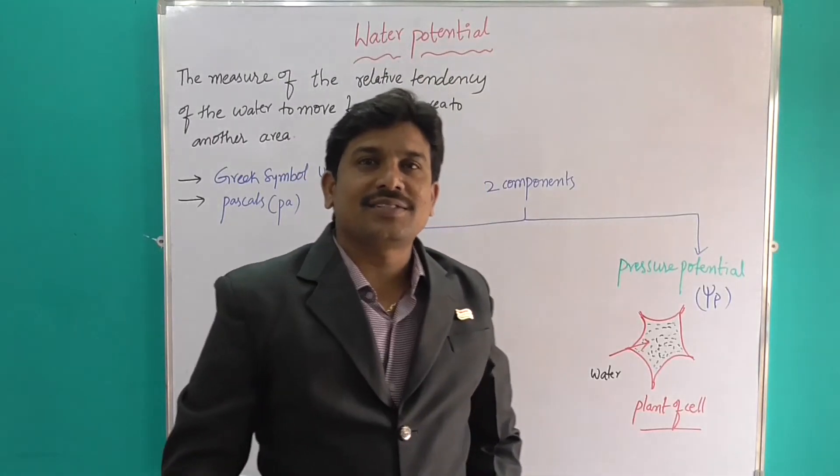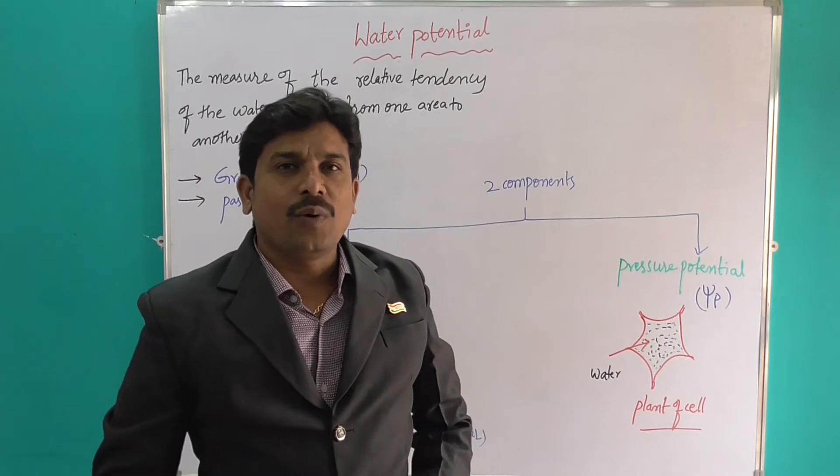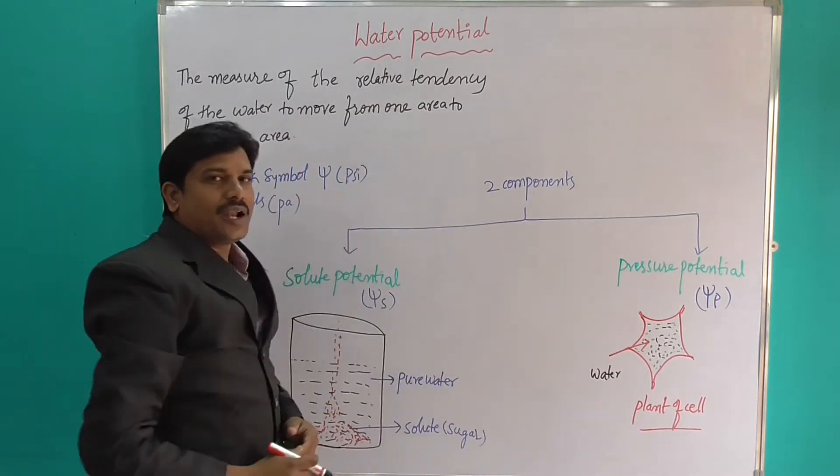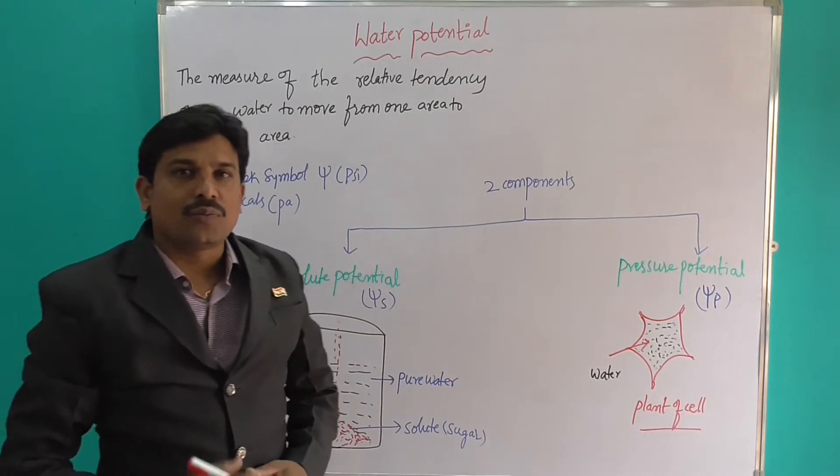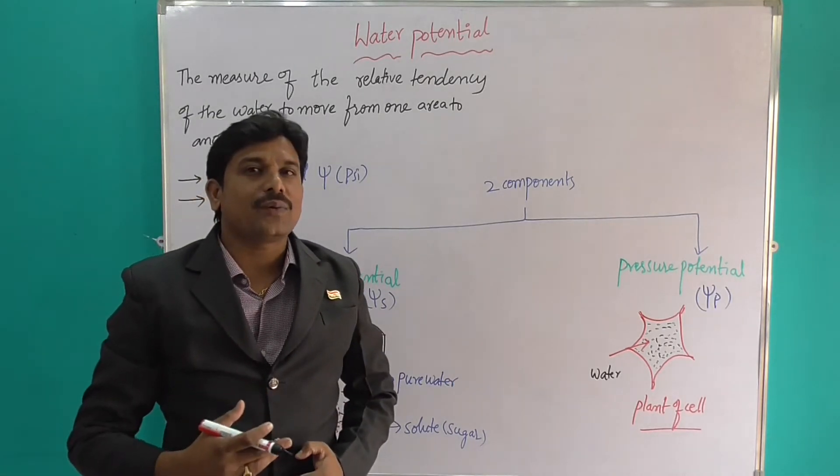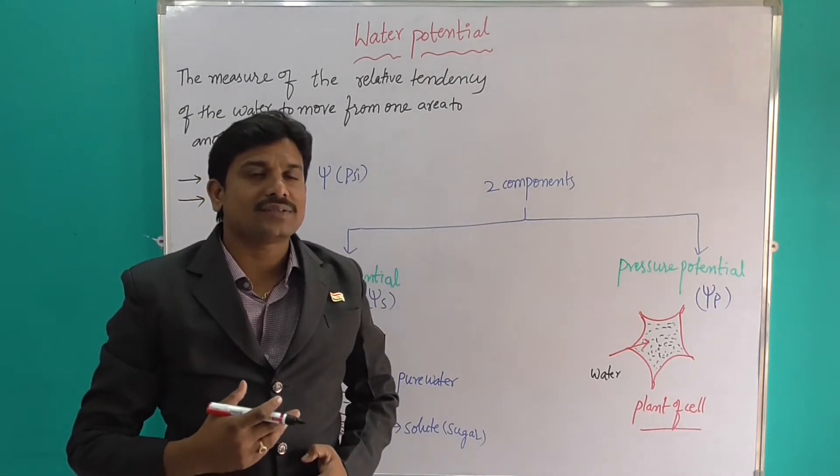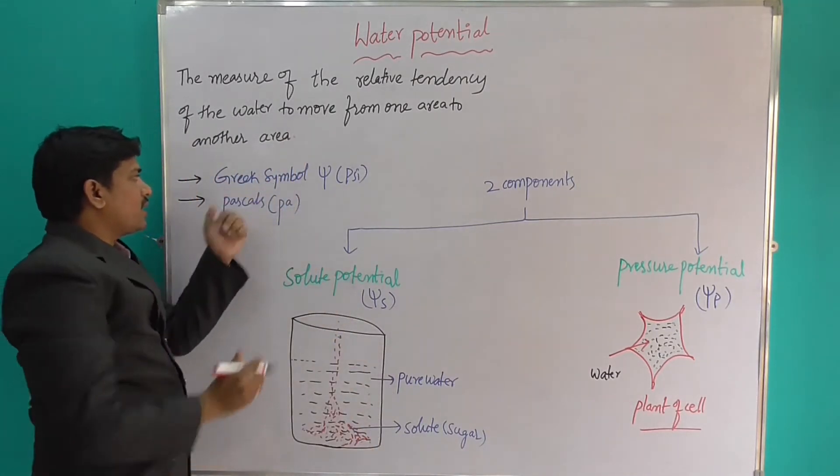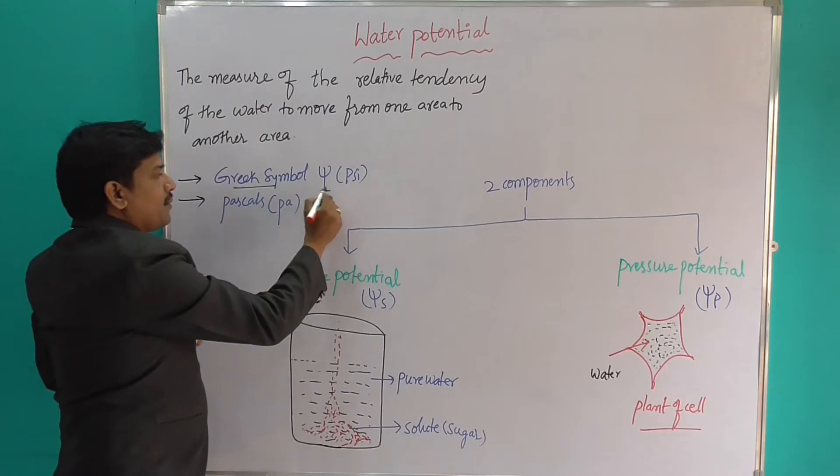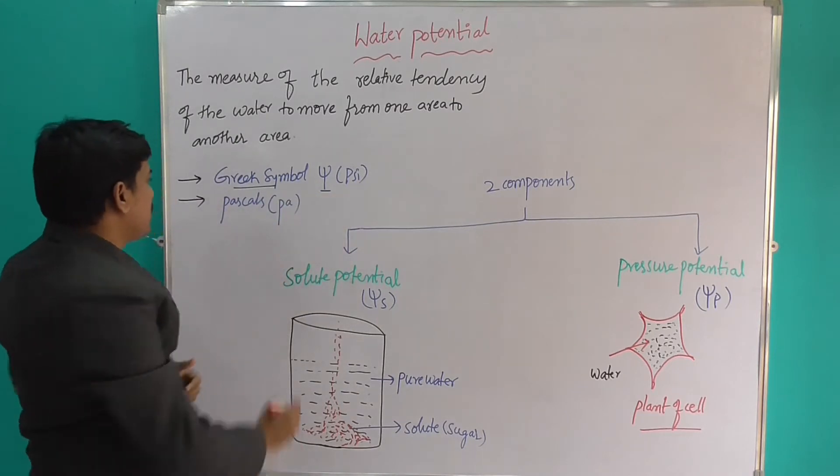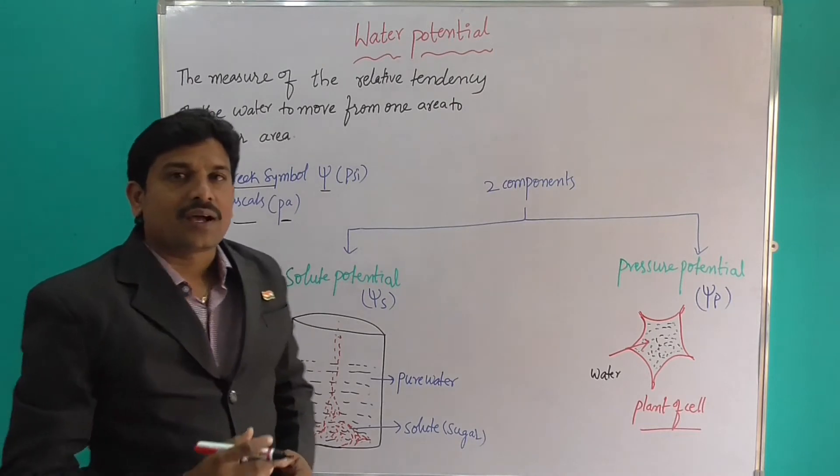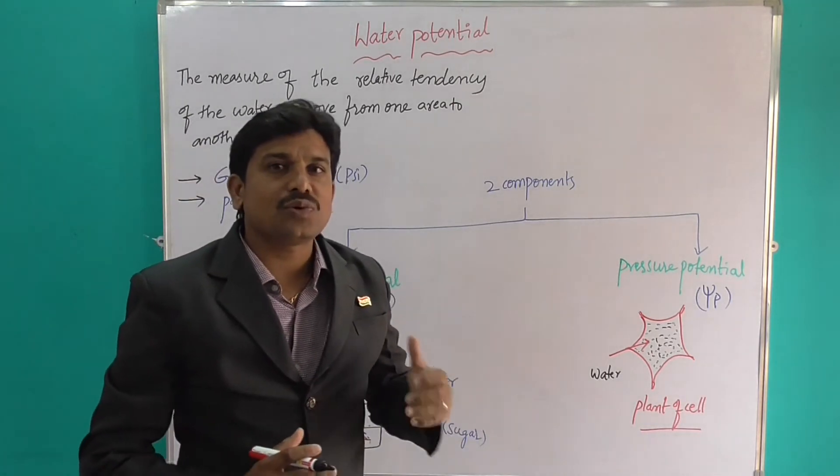Let us discuss water potential. What is meant by water potential? The measure of the relative tendency of the water to move from one area to another area is called water potential. It is denoted by the Greek symbol psi (ψ) and expressed in Pascal (P). It measures kinetic energy and has two components.